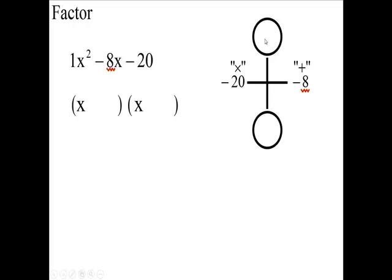I want two numbers that I multiply to give you negative 20, and when I add these two numbers, I'm going to put a number here and a number here. When you add them, you get negative 8. So, the first thing I want to do is list all of the factors of 20.